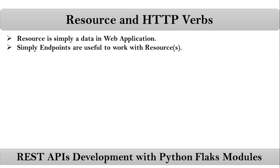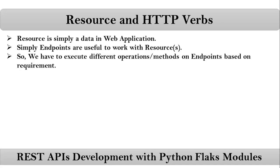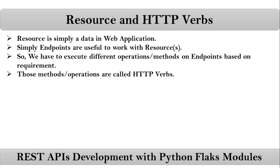Sometimes you want to get existing resource or existing employee information, so you have to perform a different operation on your endpoint. Sometimes you need to create new employee information in the web application, so you have to perform another operation on your endpoint. We have to execute different operations or methods on endpoints based on our requirement, and those operations or methods are called simply HTTP verbs.